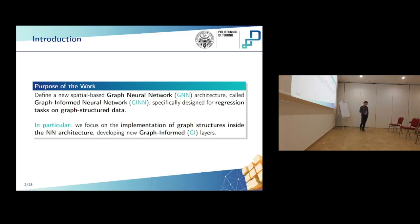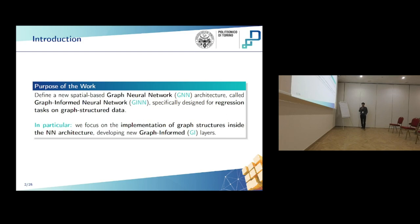The purpose of this work is to define a spatial-based graph neural network that we are going to call a graph-informed neural network, specifically designed for regression tasks on graph-structured data. In particular, we want to implement inside the neural network architecture the graph structure, developing the so-called graph-informed layers.